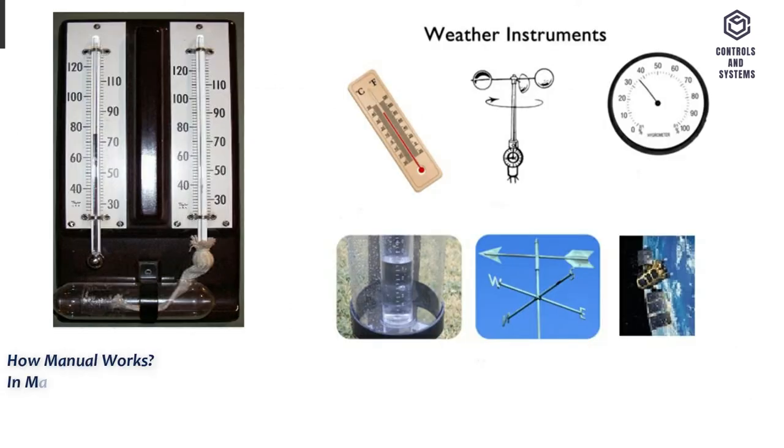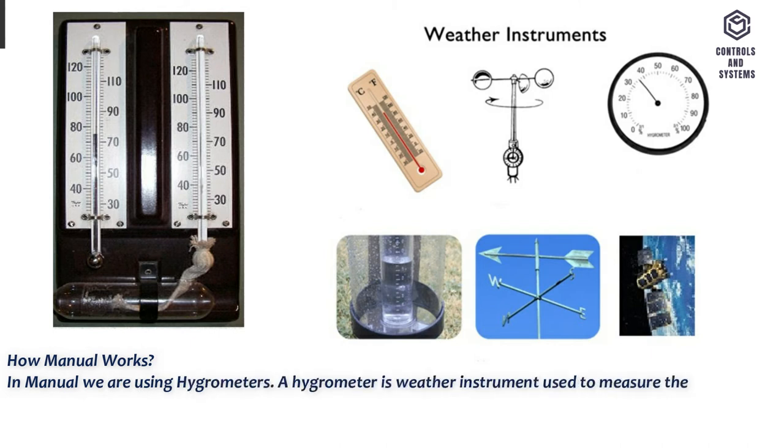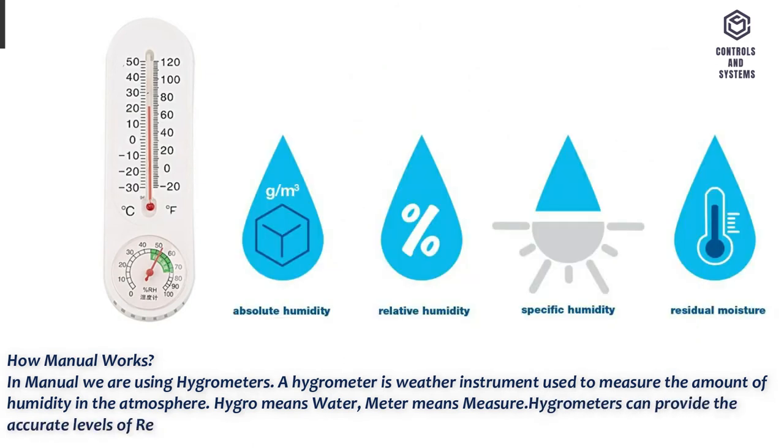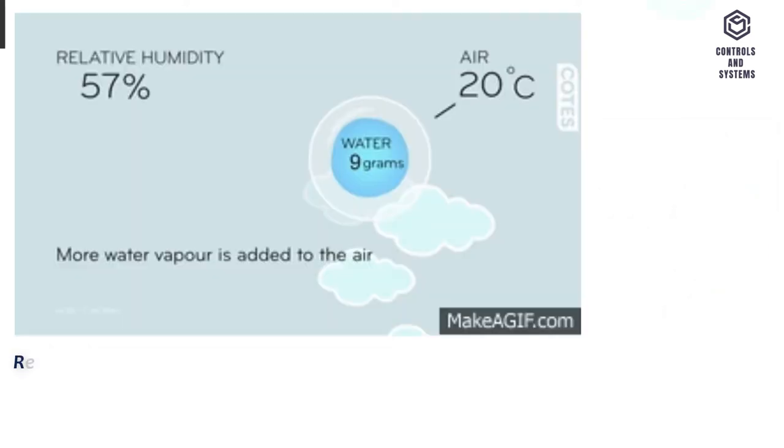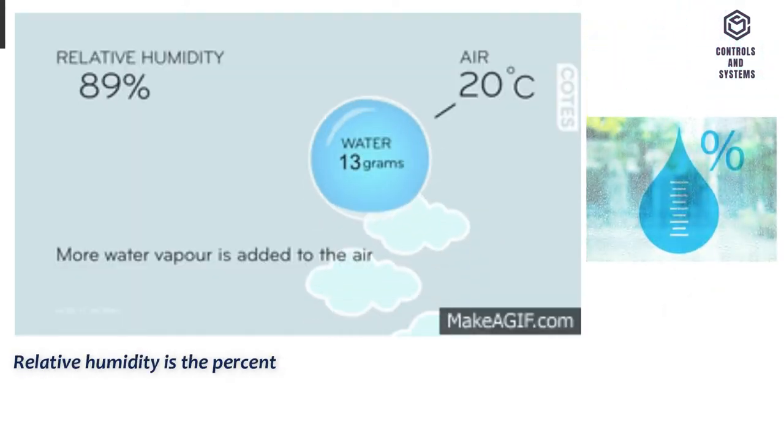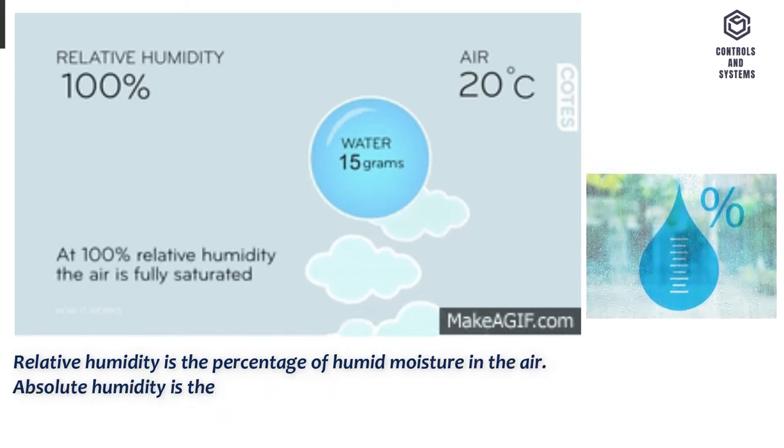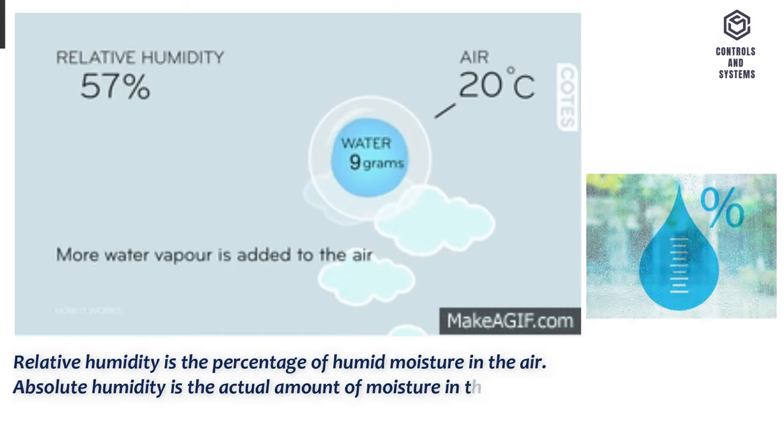How Manual Works. In manual we are using hygrometers. A hygrometer is weather instrument used to measure the amount of humidity in the atmosphere. Hygro means water, meter means measure. Hygrometers can provide the accurate levels of relative humidity and absolute humidity. Relative humidity is the percentage of humid moisture in the air. Absolute humidity is the actual amount of moisture in the atmosphere.